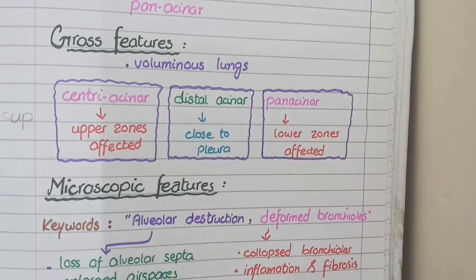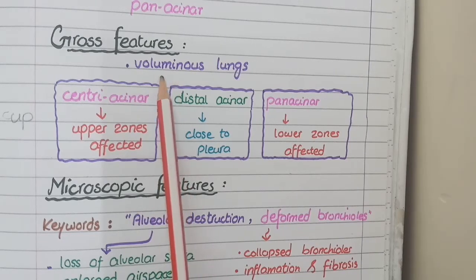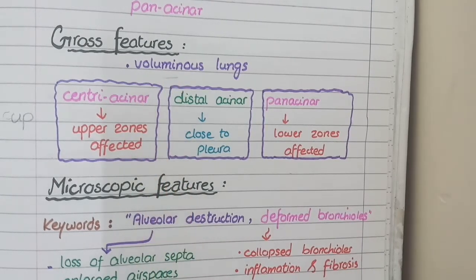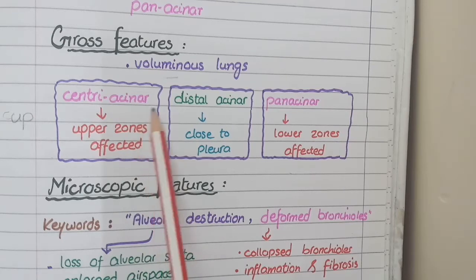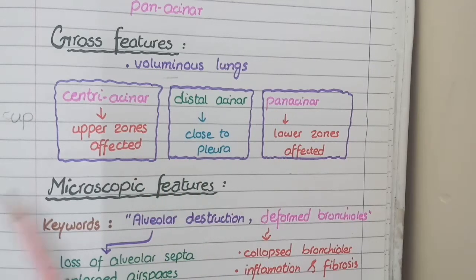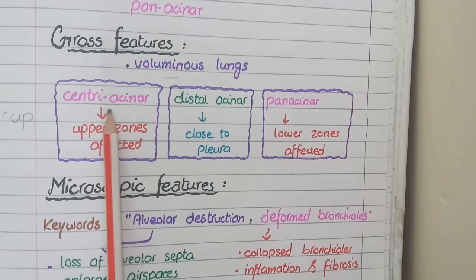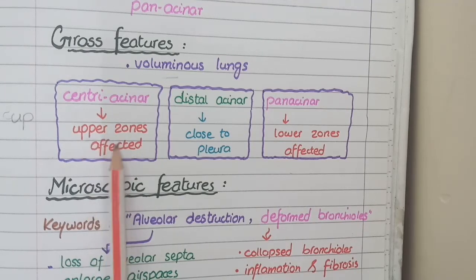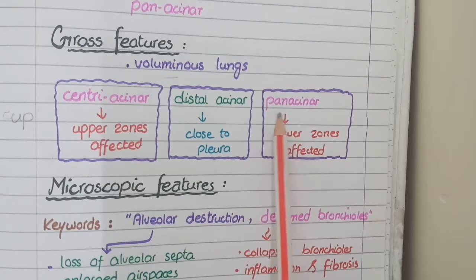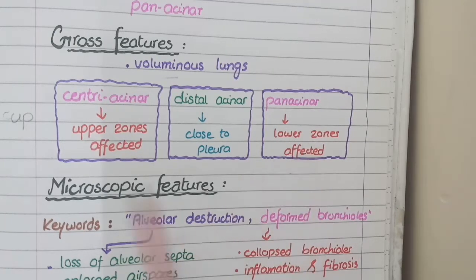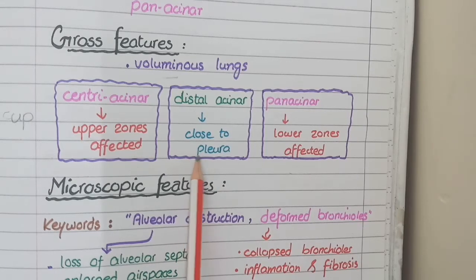Now let's come to the gross features. As emphysema is an obstructive lung disease, this obstruction causes trapping of air inside the lungs which makes the lungs voluminous. On a gross specimen of emphysema, you see lungs that are voluminous or increased in size. Each type of emphysema affects specific parts of the lungs: centriacinar emphysema affects the upper zone, panacinar emphysema affects the lower part, and distal acinar emphysema affects regions close to the pleura.